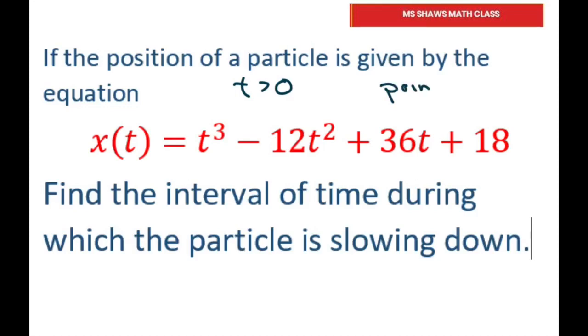So first we're going to do the point at which particle changes directions. And then we're also going to find the interval of time in which the particle is slowing down. So basically, let's go ahead and take the derivative.